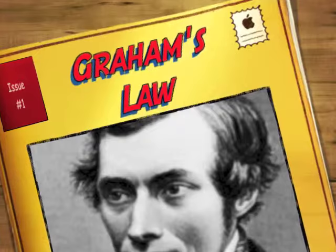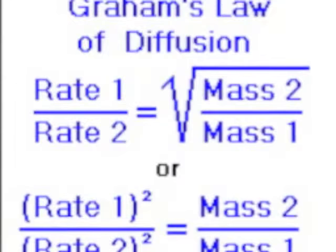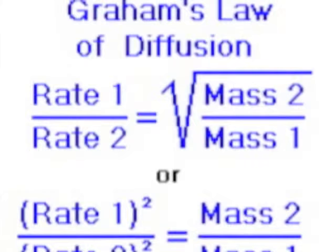The rate of effusion of the first gas over the rate of effusion of the second gas is equal to the square root of gas 1 divided by gas 2.